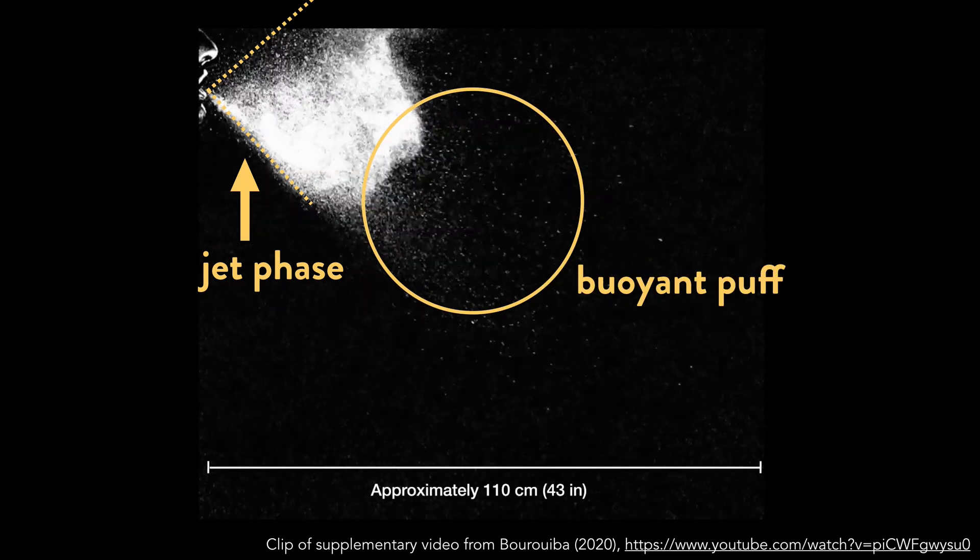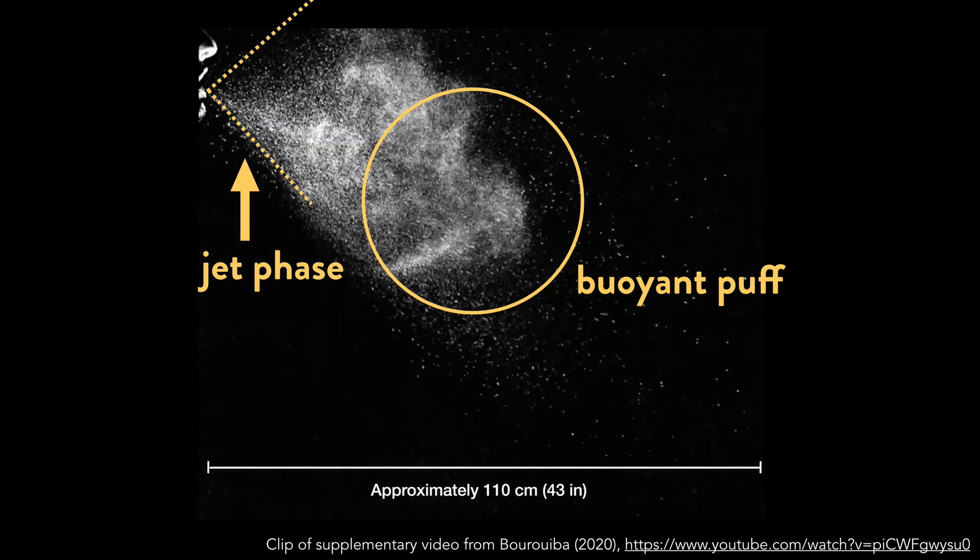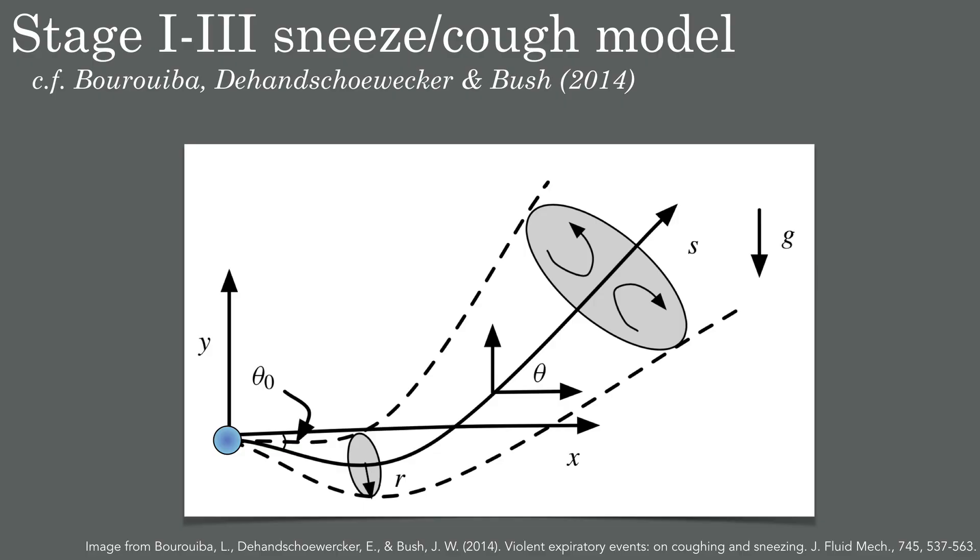Throughout this, you'll notice at least two phases: a jet-like phase where the cloud is first expelled, and then a secondary phase where the cloud slows and moves upwards. As the author points out, based on other videos, these emissions can travel for quite a distance, up to 7 or 8 meters.